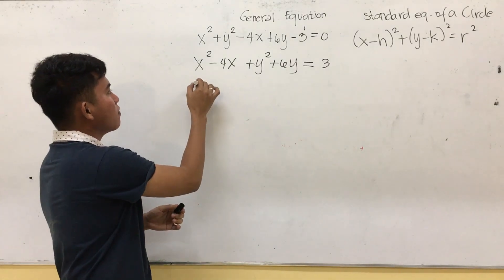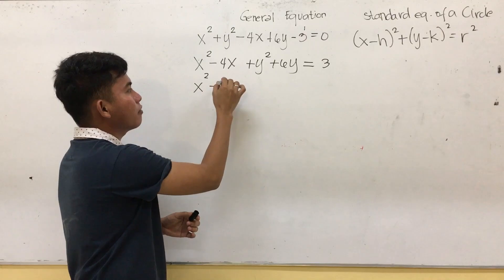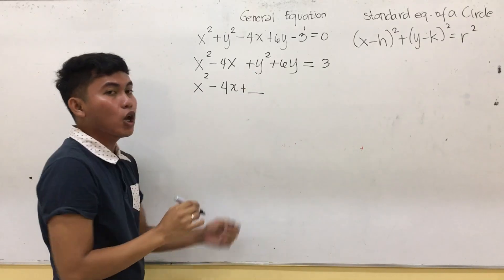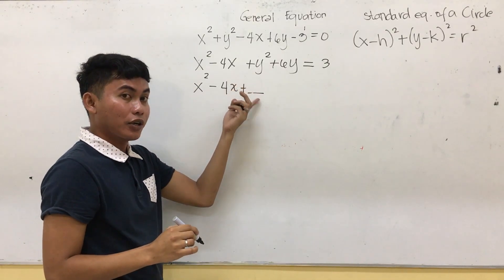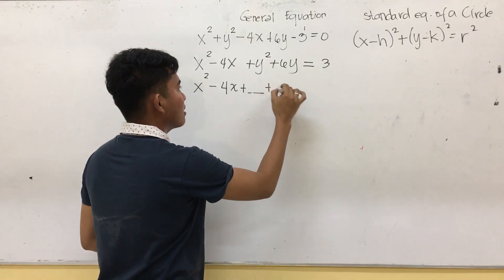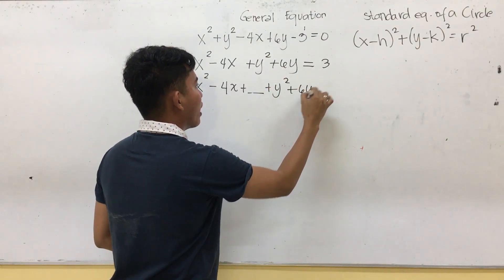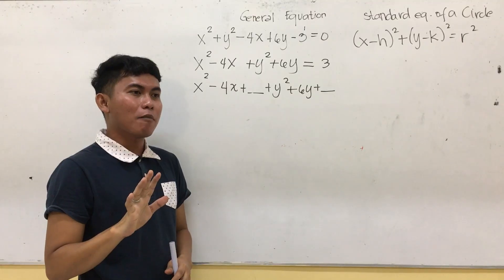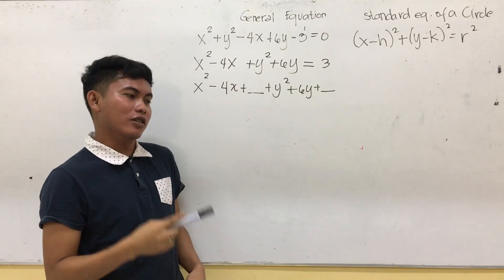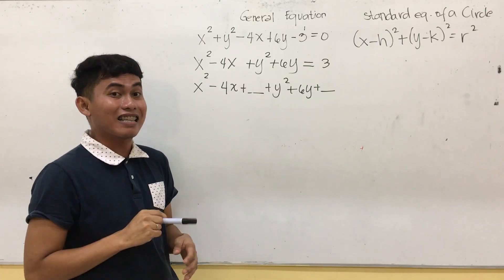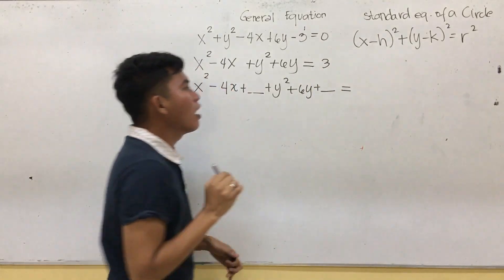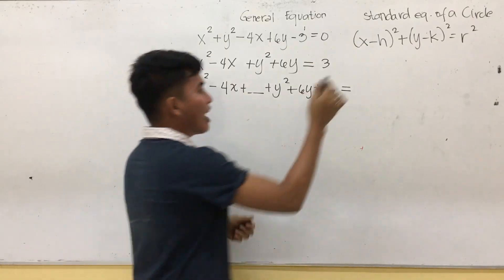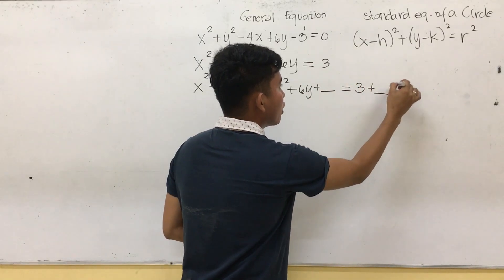So the process is: copy x squared, then add plus blank. We are going to fill in the blank later. Then plus y squared plus 6y plus blank. This blank technique is one of the techniques to make the process faster. We have 2 blanks here, so on the other side we are also going to put 2 blanks. Whatever number you put on this side, the same number goes on the other side.